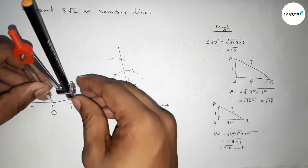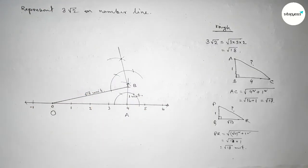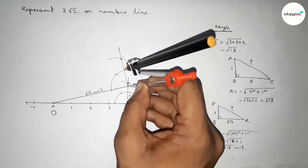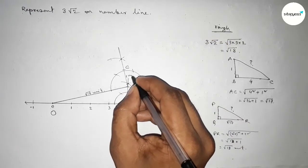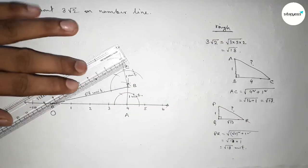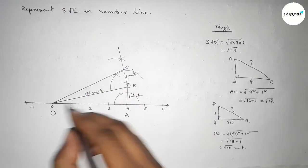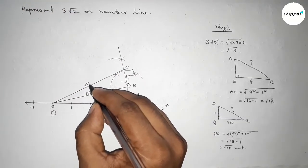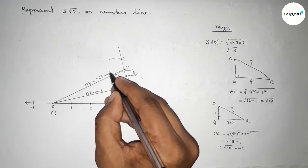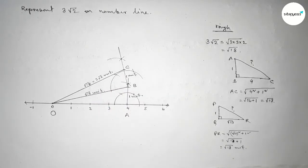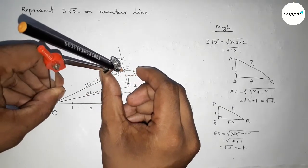Taking the length between 0 and 1 using compass and cutting to mark point C — this is one unit length. Now joining O and C. From right angle triangle OBC, this hypotenuse OC equals √18, which equals 3√2 units.